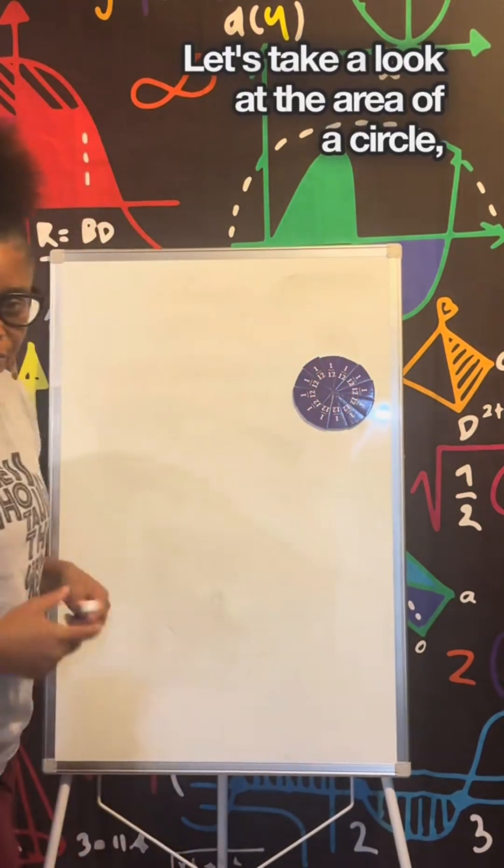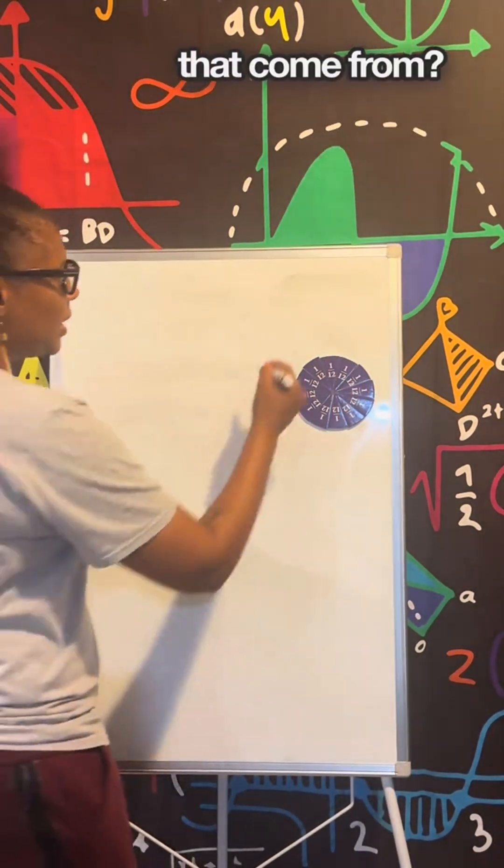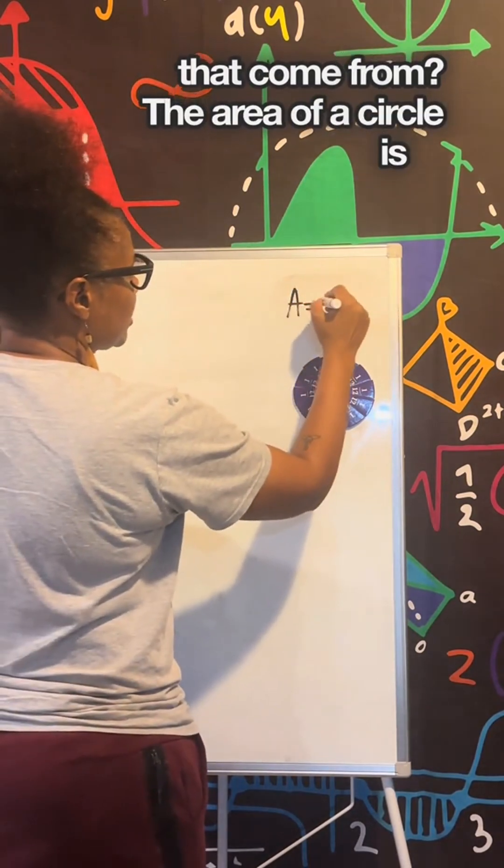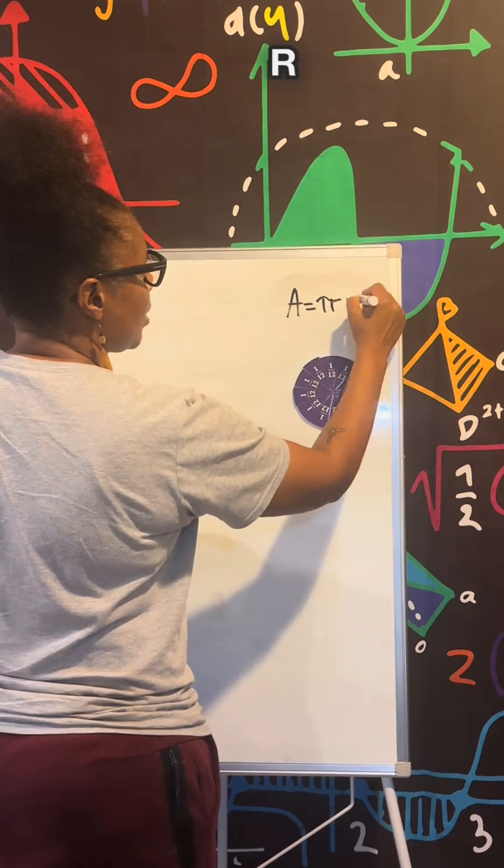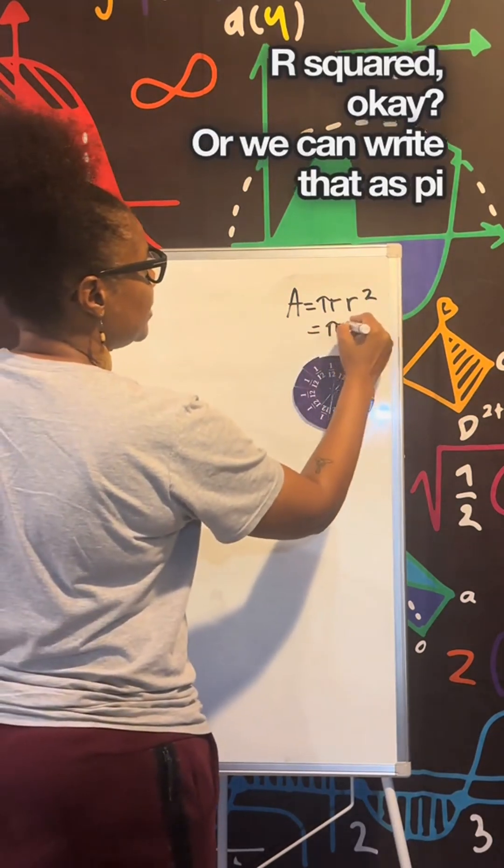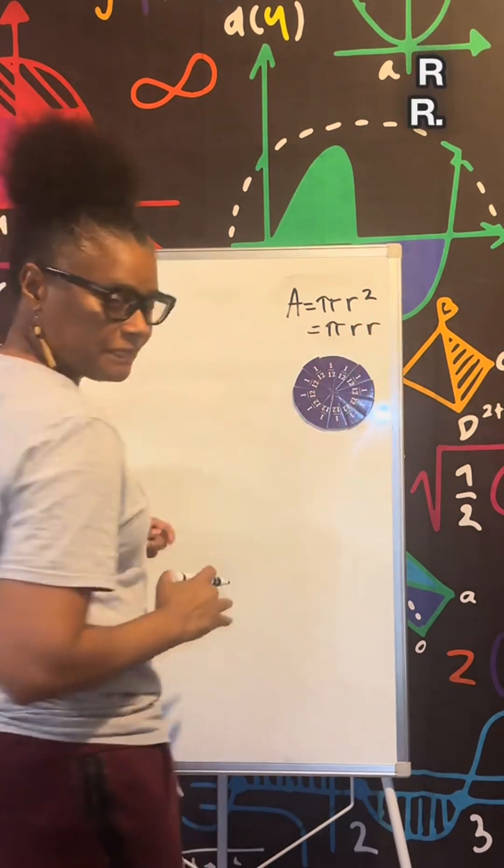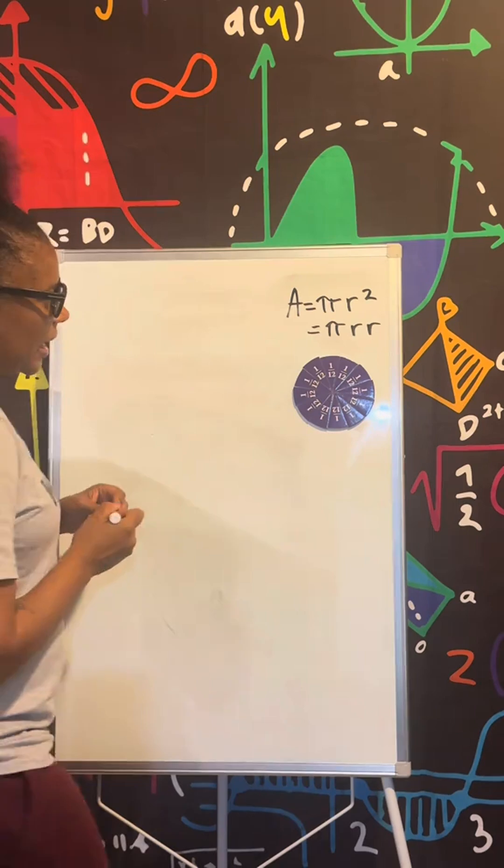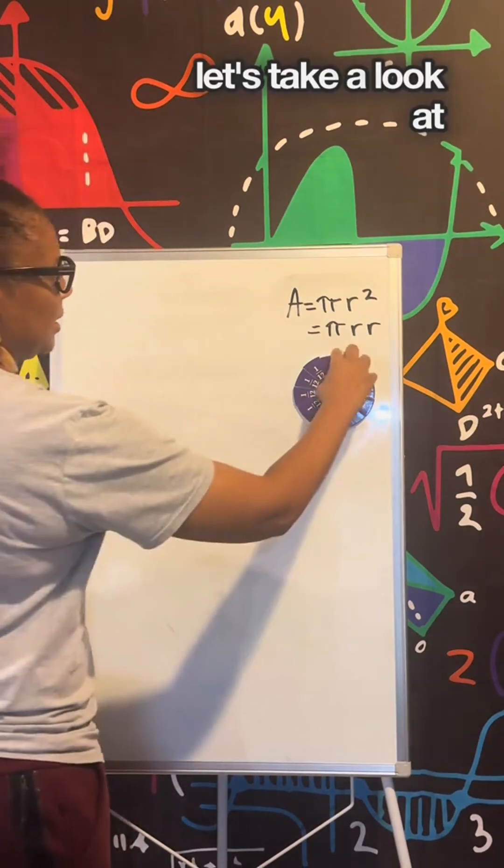So area, let's take a look at the area of a circle and where does that come from. The area of a circle is πr², okay? Well we can write that as πr·r.